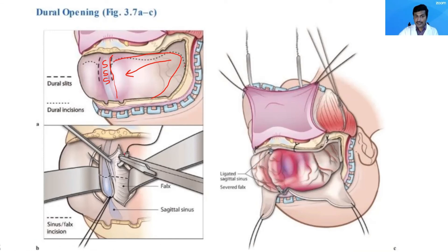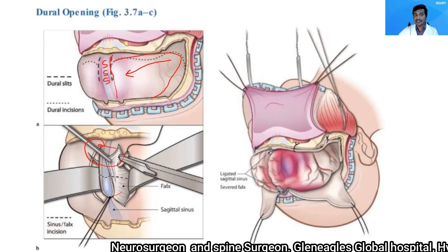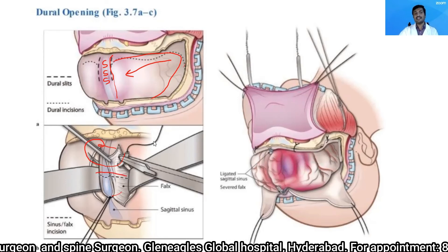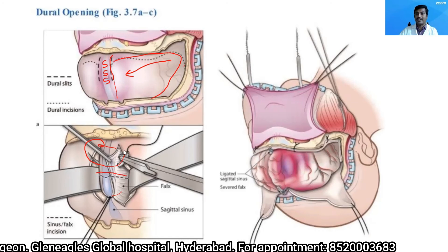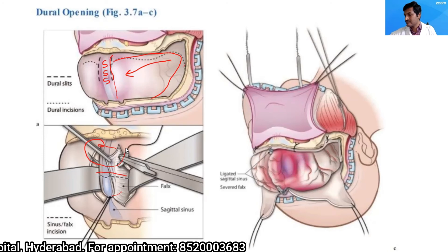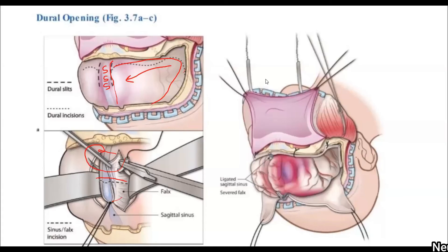For superior sagittal sinus ligation: pass a needle through the falx cerebri, take it across, and ligate the sinus thoroughly. Take a second ligature, then cut the superior sagittal sinus between the two ligatures. The ligatures must not slip; a double ligature can be taken if required. This completes reflection of the dura mater.